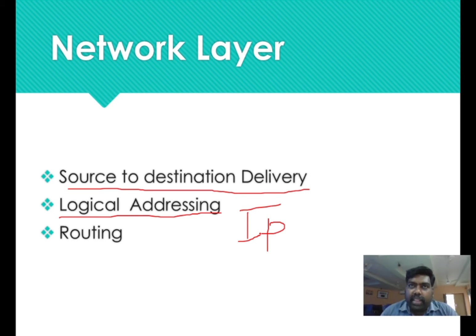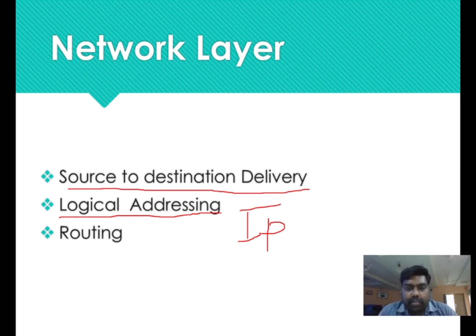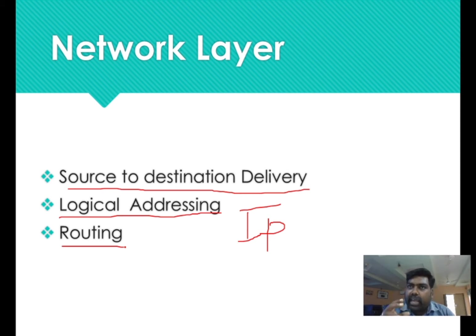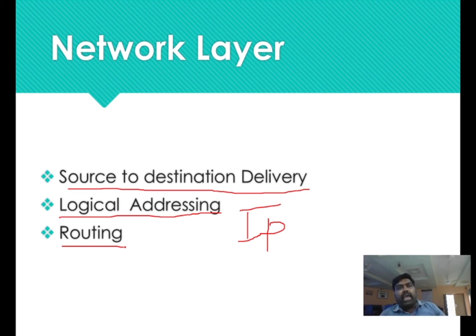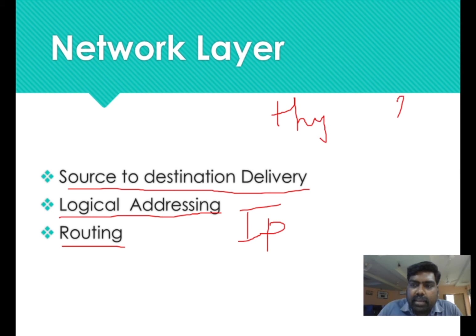Internet allows data transfer across networks. IP address is very, very important. Logical addressing involves the routing process across networks. You need to understand the concept of source to destination delivery, logical addressing, and routing. What is the difference between physical addressing and logical addressing? Physical addressing is the layer 2 address, while logical addressing is very important for cross-network communication.